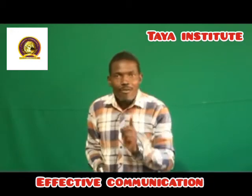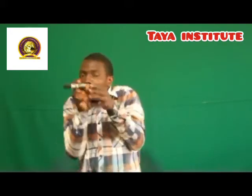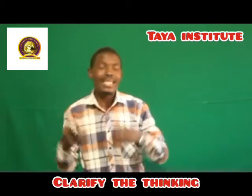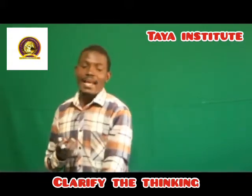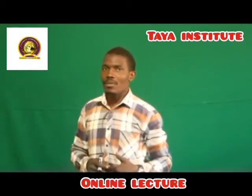Number two technique: effective communication. In effective communication, that's where you build up the techniques. Number three: you clarify the thinking. It's very important to clarify the thinking, because when people come for counseling, they always have negative thinking. So as a counselor, make sure you first look at the emotion side, then communicate effectively, and then clarify the thinking. That's number three.